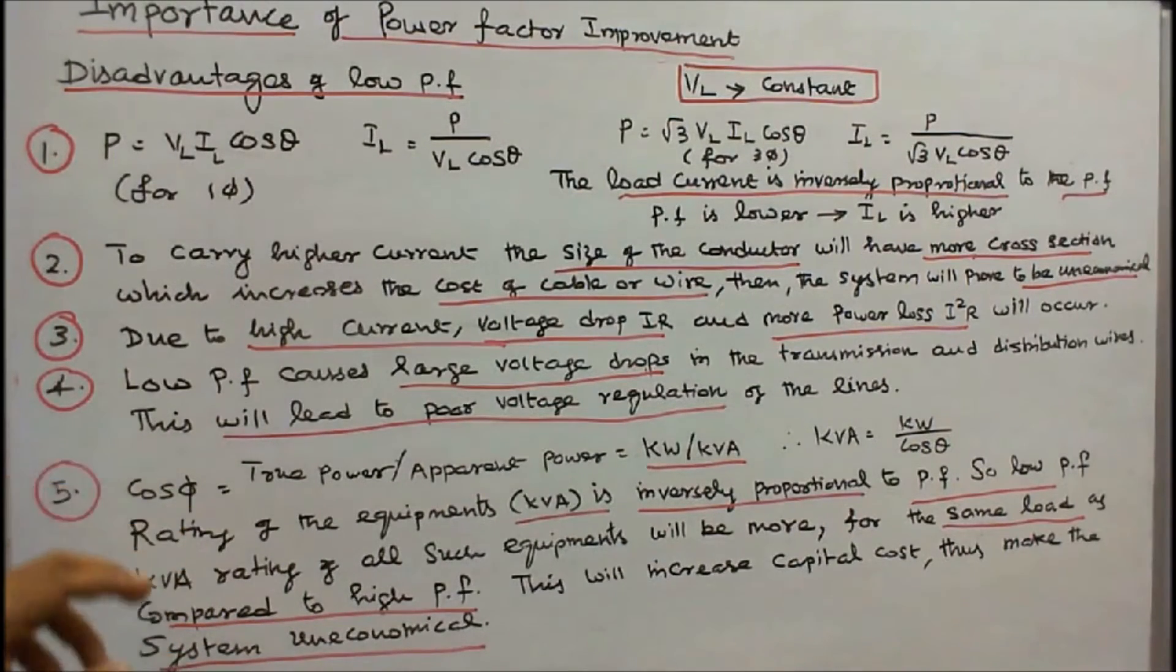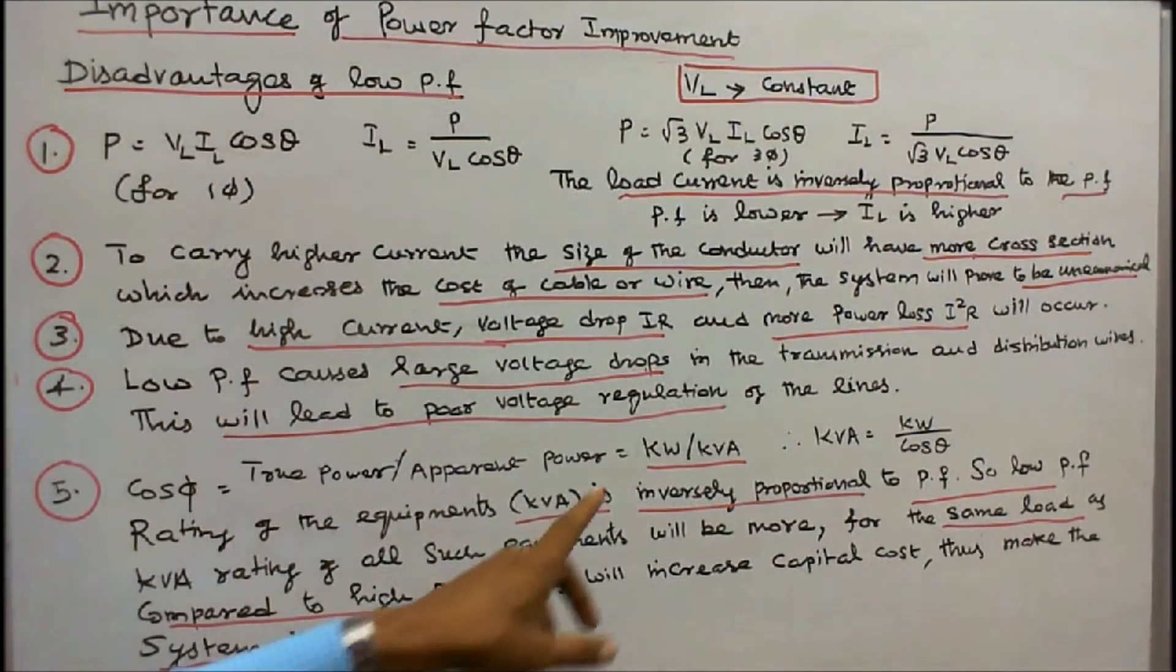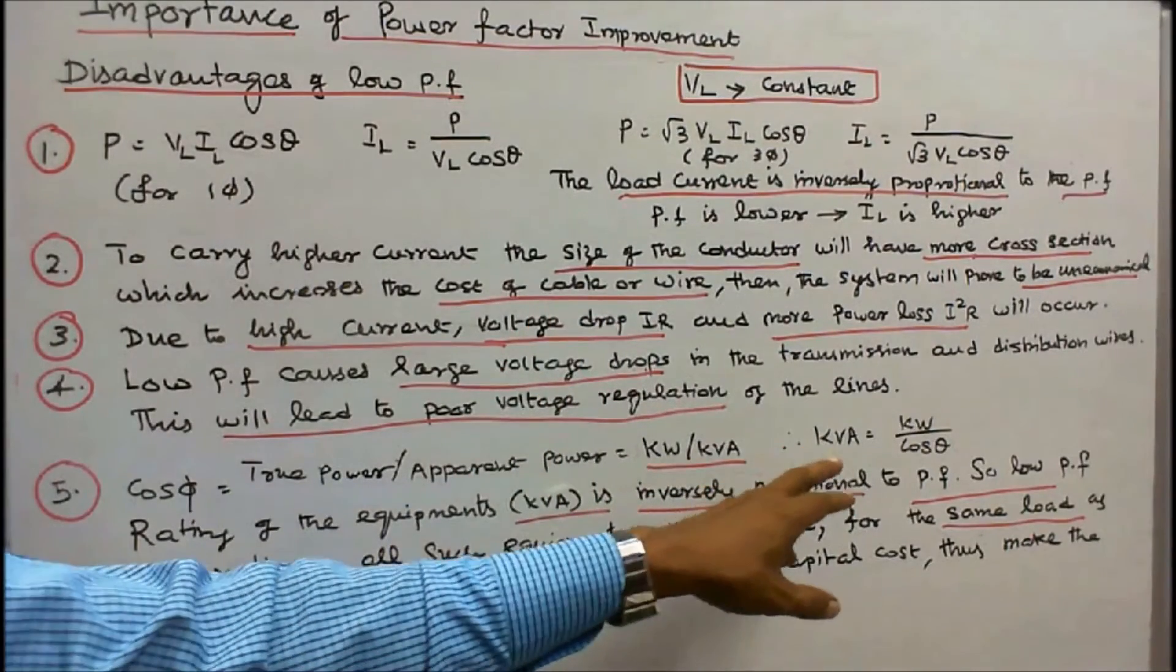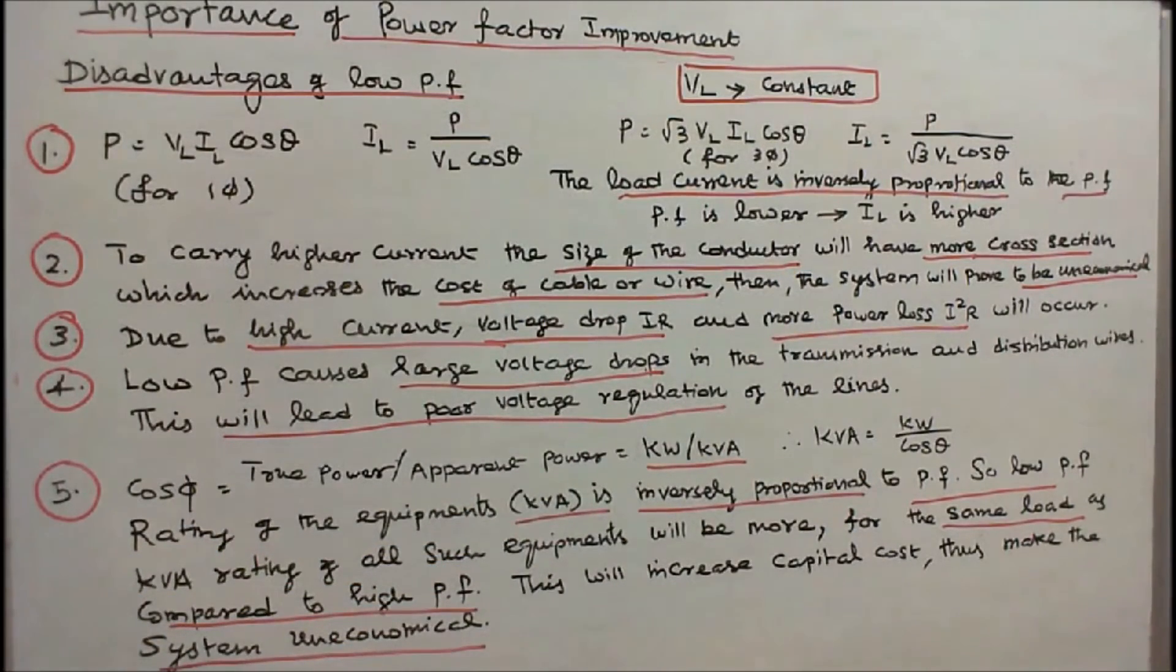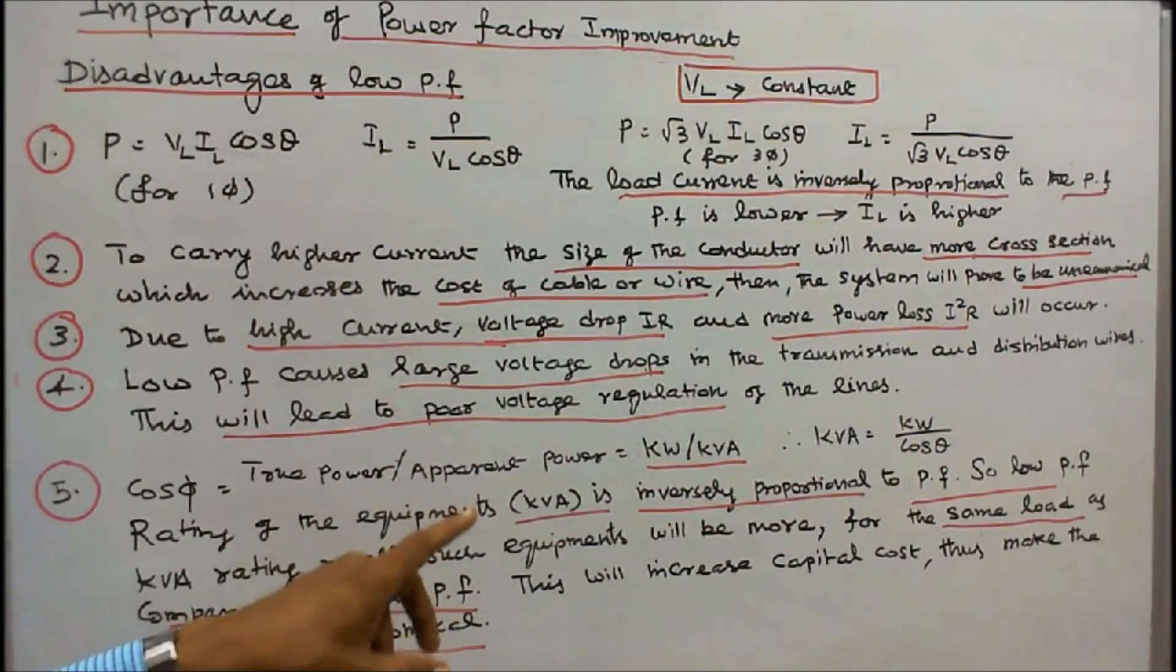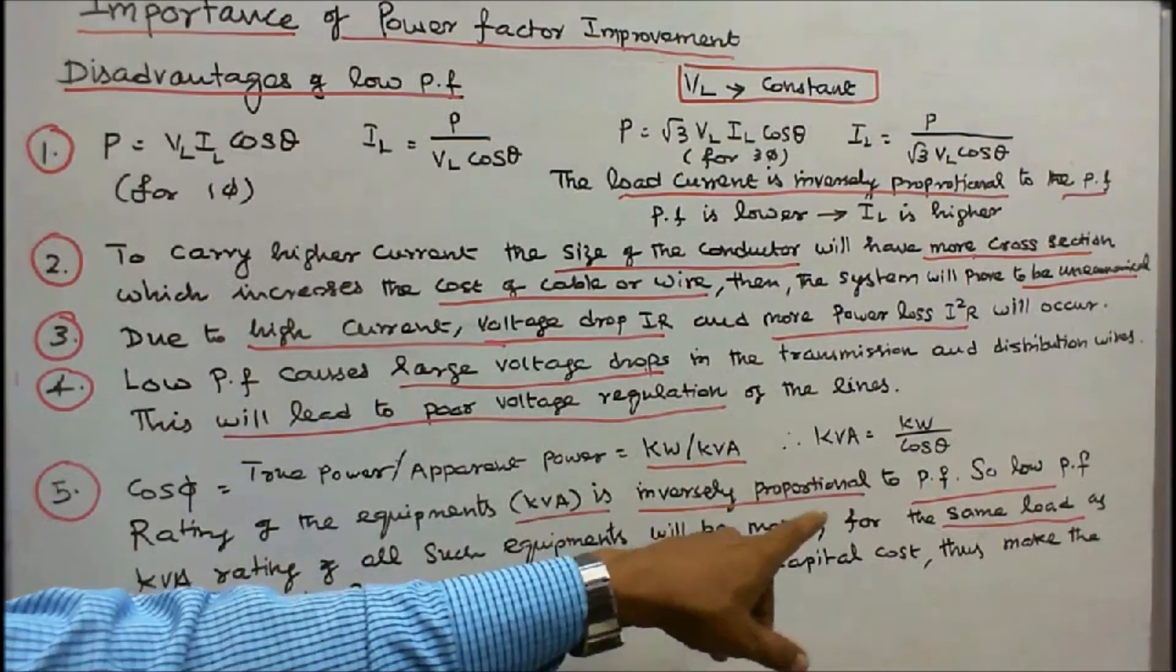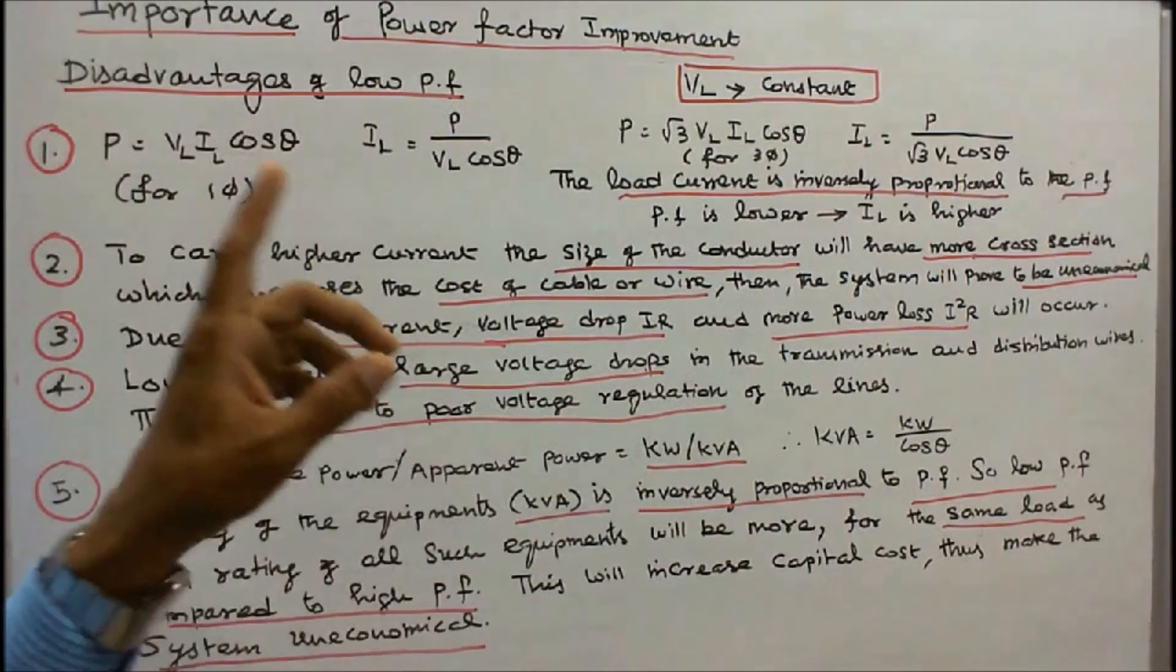Number 5: Cos φ or cos θ is equal to true power divided by apparent power, that is equal to kilowatts by kVA. Therefore, kVA is equal to kilowatts divided by cos θ. Rating of the equipments—transformers, alternators—are rated in kVA and is inversely proportional to power factor. So low power factor means the kVA rating of all such equipments will be more for the same load.